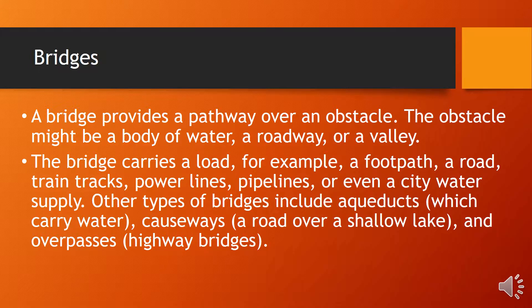A bridge provides a pathway over an obstacle. The obstacle might be a body of water, a roadway, or a valley. The bridge carries a load — for example a footpath, a road, train tracks, power lines, pipelines, or even city water supply. Other types of bridges include aqueducts, which carry water; causeways, a road over a shallow lake; and overpasses, which are highway bridges.